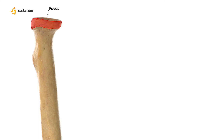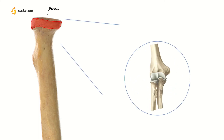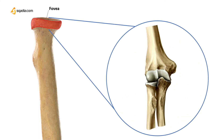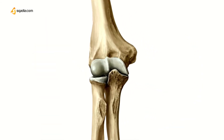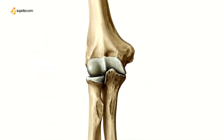The head articulates at two points: one is at the capitulum of the humerus, and the other at the radial notch of the ulna. The capitulum of the humerus articulates with the dip on the top of the radial head, forming the elbow joint.